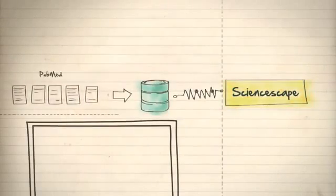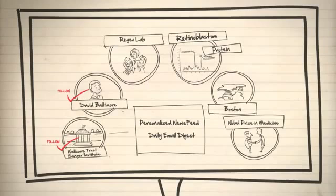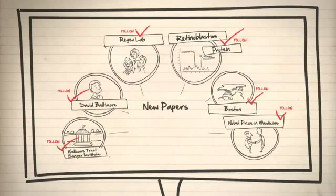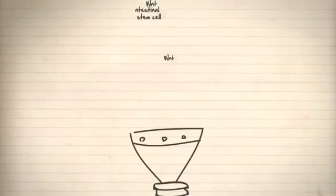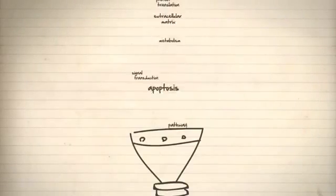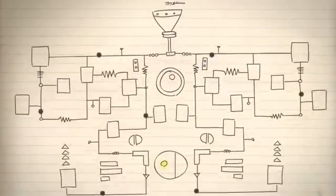ScienceScape is updated in real time. To stay on top, you just subscribe to the areas that are key for what you do. And new publications are delivered right to you, so you never miss another important paper. And even though ScienceScape works automatically, your input helps the map become more and more complete over time.